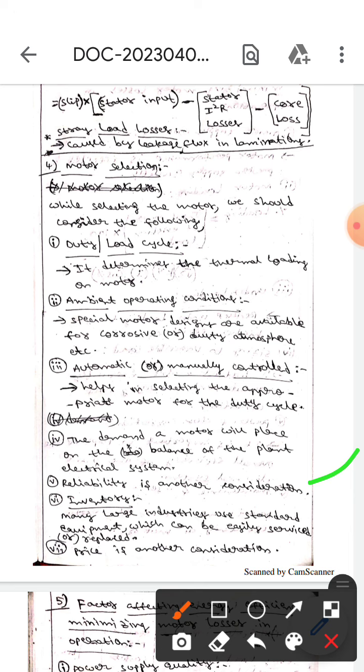The next parameter is inventory. Many large industries use standard equipment which can be easily serviced or replaced. The next parameter is price. We should consider the price while